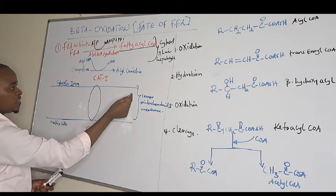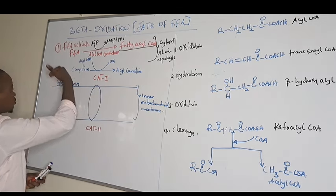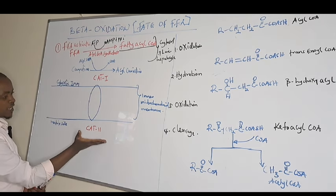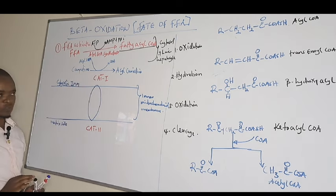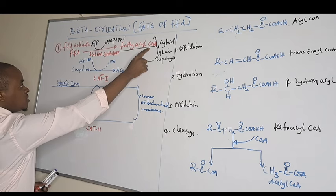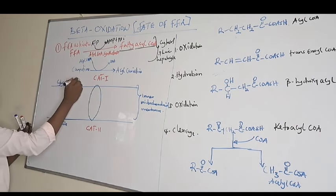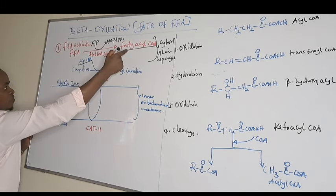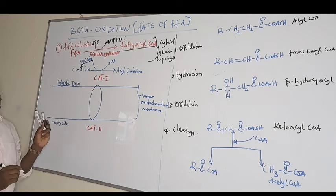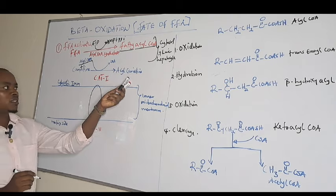This diagram represents the inner mitochondrial membrane, whereby one side is the cytosolic side and the other is the matrix side — inside and outside the mitochondria. What happens is that the fatty acyl-CoA formed in the cytosol combines with carnitine, and in the presence of CAT1, we form acyl-carnitine.